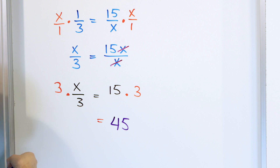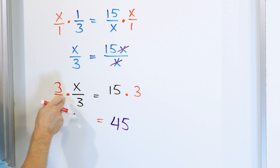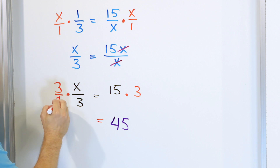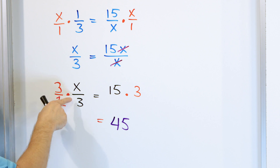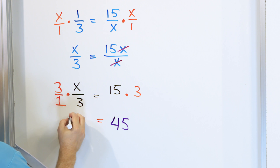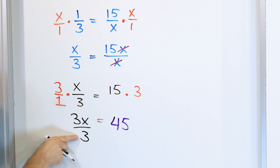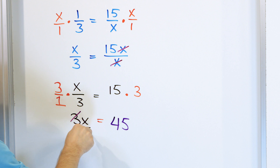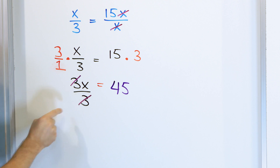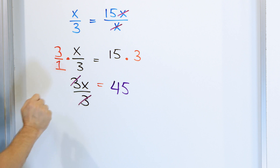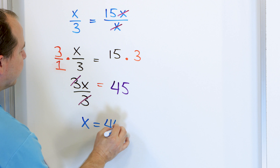On the left-hand side, we're multiplying by three over one. We have a three on the top and a three on the bottom. Three times x on the top is 3x, and one times three on the bottom is three. But you still have the three on the top and three on the bottom, so they cancel. You can cancel them at this step, or even before the multiplication. The only thing left is x, and you have it equal to 45. That is the final answer.